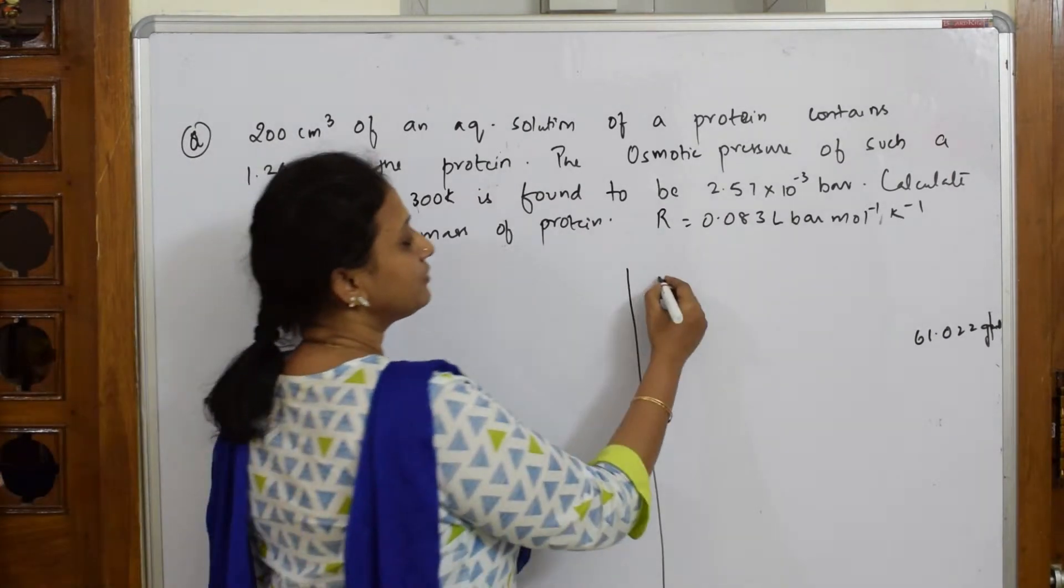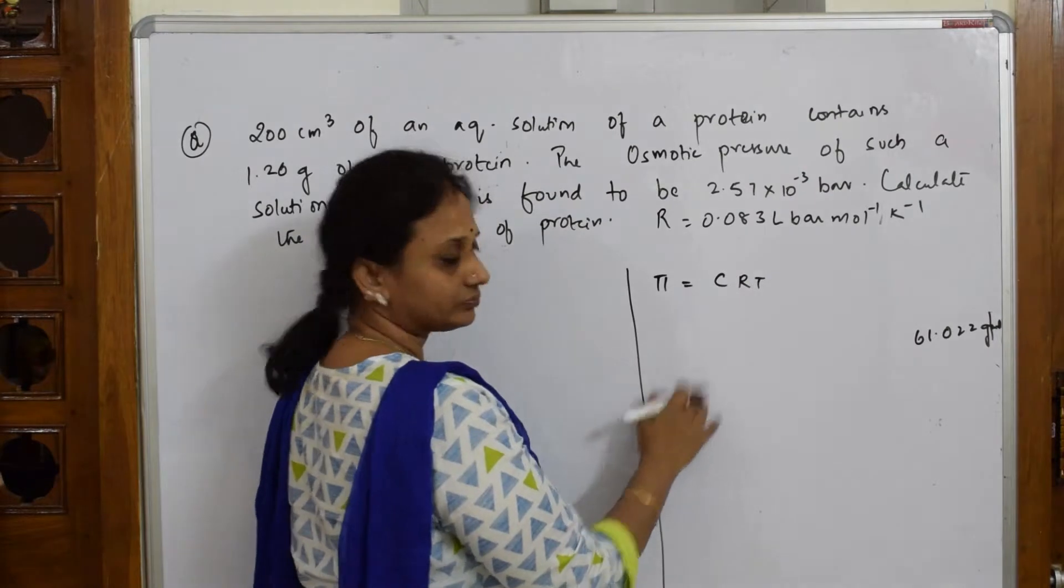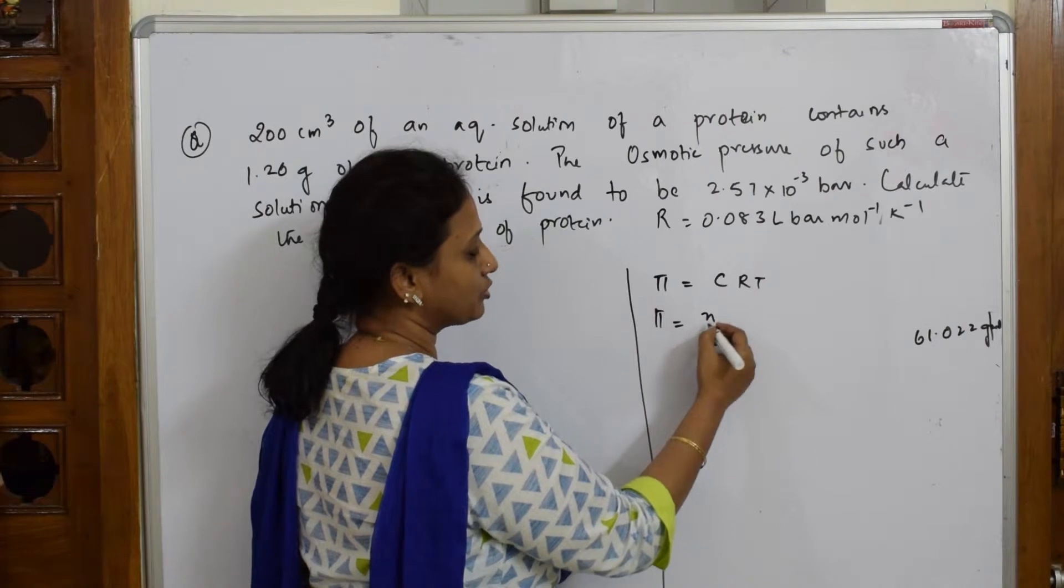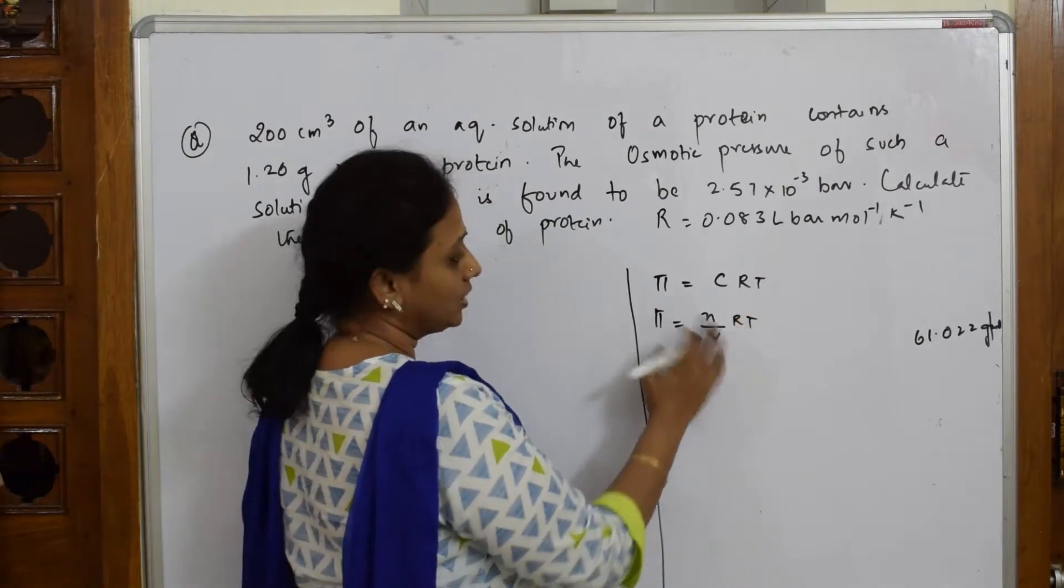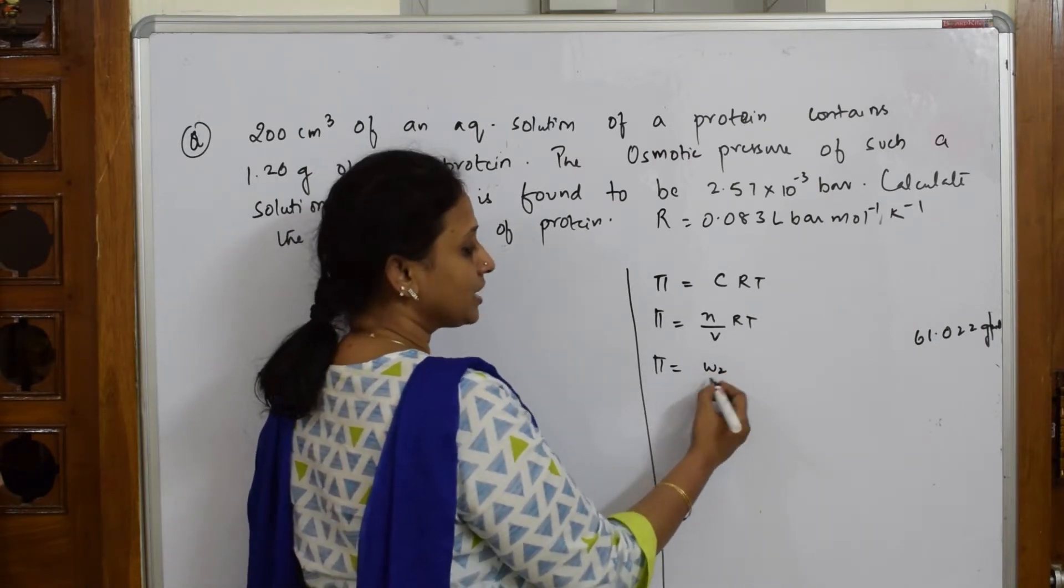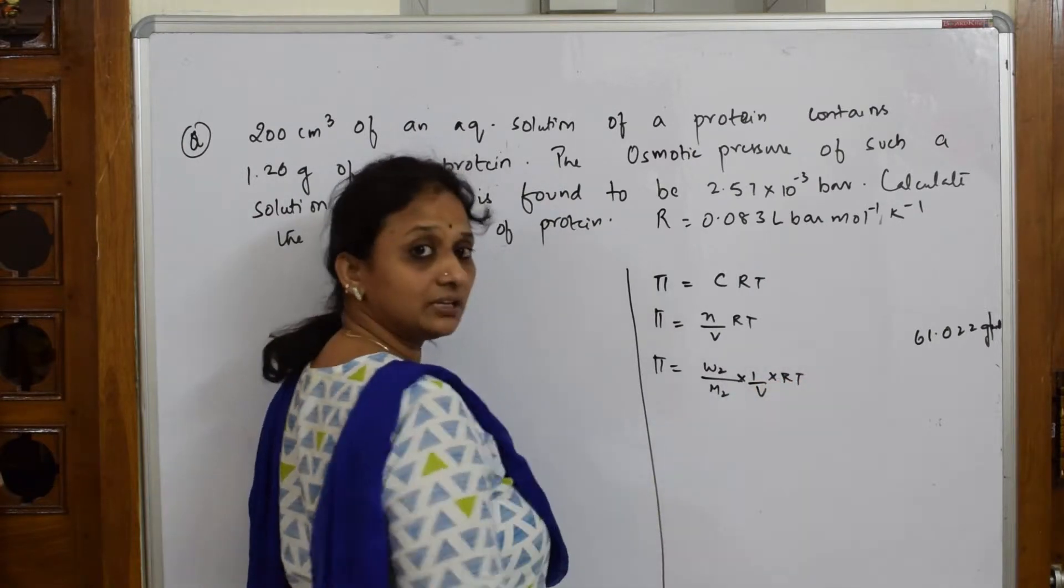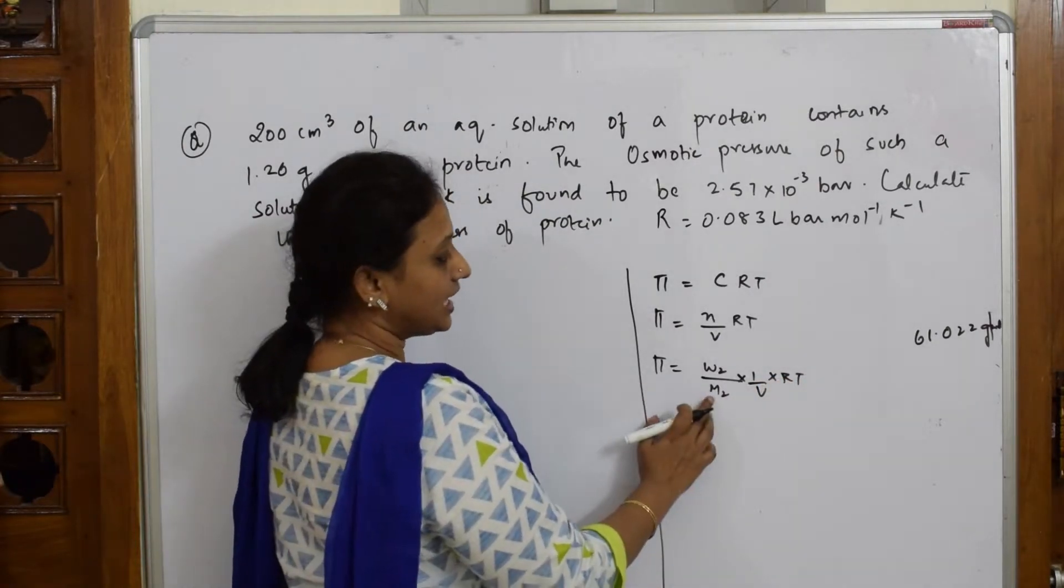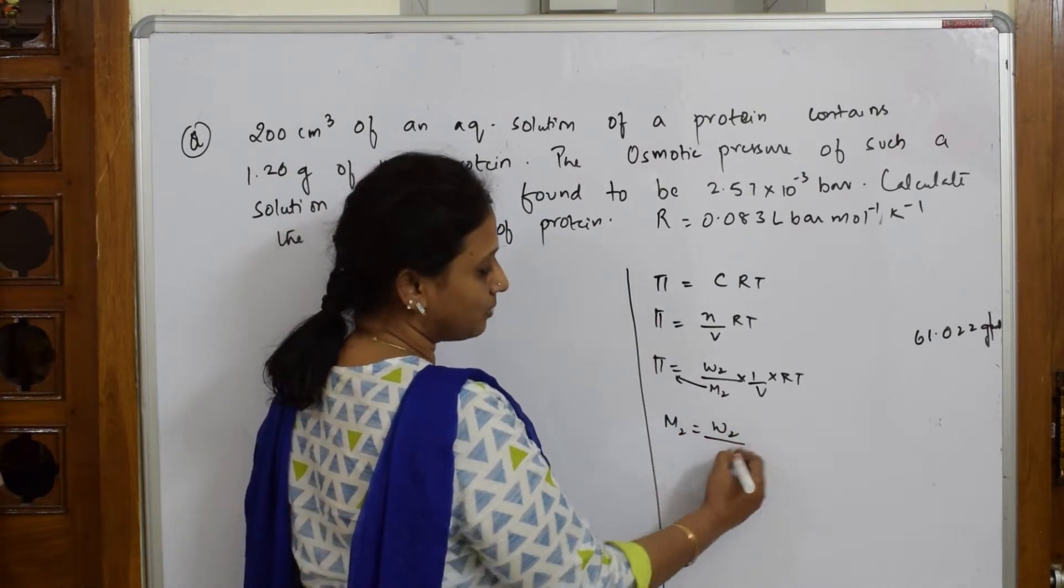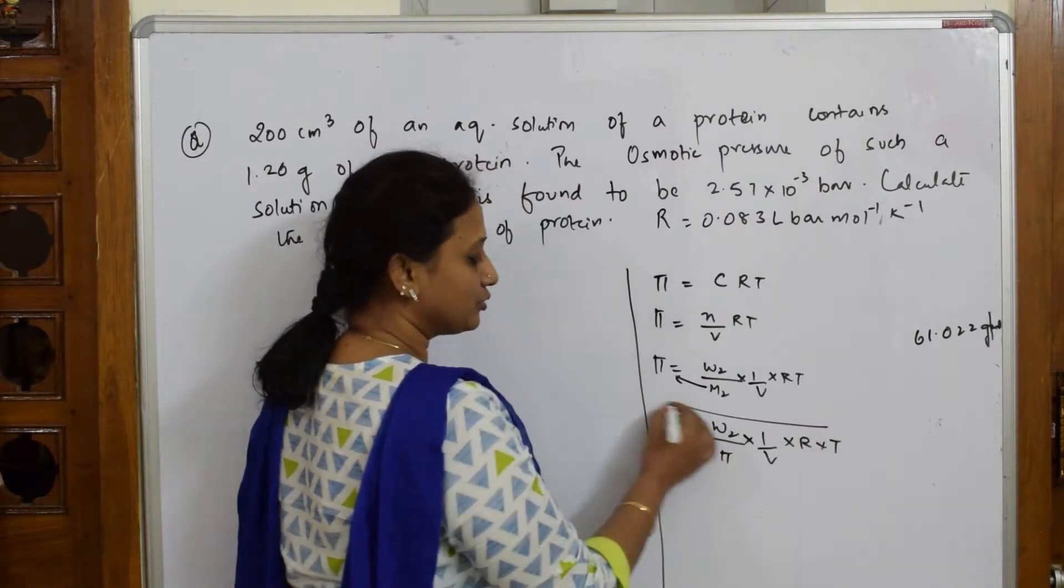We have already seen pi is equal to CRT. What is C? Concentration, nothing but n, that is your number of moles by V into RT. What is n again? n is equal to number of moles of solute, that is w2 by M2 into 1 by V into R into T. I have to find this M2. Just cross multiply. What do I get? M2 is equal to w2 by pi into 1 by V into R into T. I have to use this relationship.